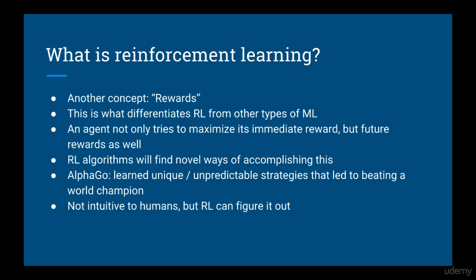There are a couple more things to define in reinforcement learning that are central to the subject. First, there is the concept of reward. This is what differentiates reinforcement learning algorithms from other kinds of machine learning algorithms. An agent will try to maximize not only its immediate reward but future rewards as well. Often, reinforcement learning algorithms will find novel ways of accomplishing this — for example, AlphaGo learned unique and unpredictable strategies that led to its beating a world champion at Go. These are things that aren't intuitive to humans, but reinforcement learning algorithms can automatically figure them out.